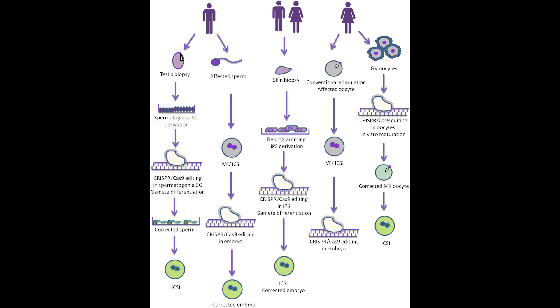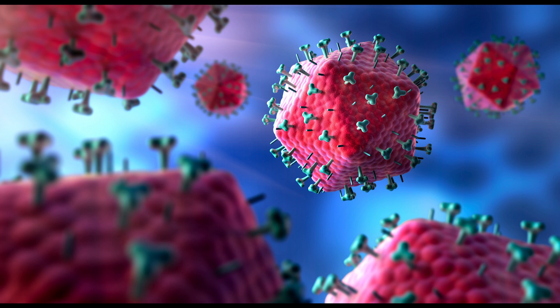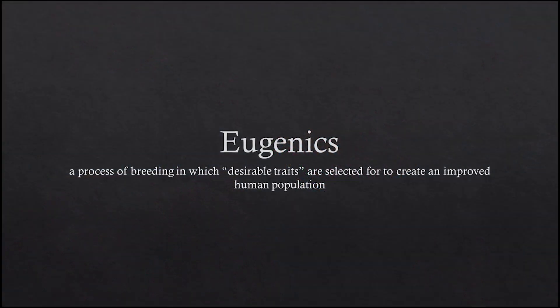For example, a parent may have the potential to choose features such as eye and hair color, along with other phenotypic expressions for their child. Both of these raise ethical debates over the use of gene editing. Some critics argue that the prevention of certain viruses, such as HIV, by such an invasive and potentially dangerous process is not worth the risk and thus should not be used on human embryos. Others fear that the use of gene editing to select for certain traits is a glorified form of eugenics — a process of breeding in which the so-called desirable traits are selected to create an improved human population. These are very real concerns that will have to be addressed as this technology grows more prevalent.